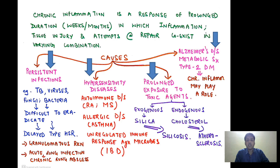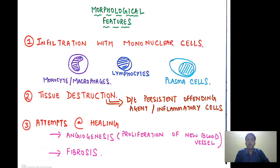Moving ahead, what are the morphological features of chronic inflammation — what are the things we are going to see at the microscopic level? Number one, we will see infiltration with mononuclear cells. Now what are the mononuclear cells? Monocytes or macrophages, lymphocytes, and plasma cells.